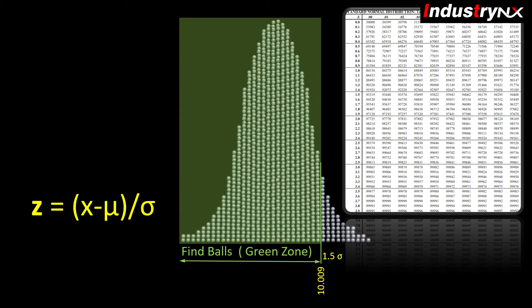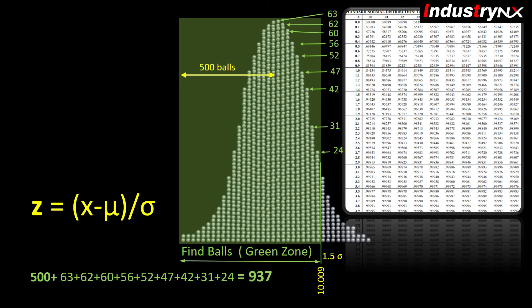Welcome back. Check your answer by counting physical balls. We know these 500 balls. Hence, total balls will be 500 plus 63 plus 62 plus 60 plus 56 plus 52 plus 31 plus 24, which equals to 937, means 0.937 probability or 93.7 percent.